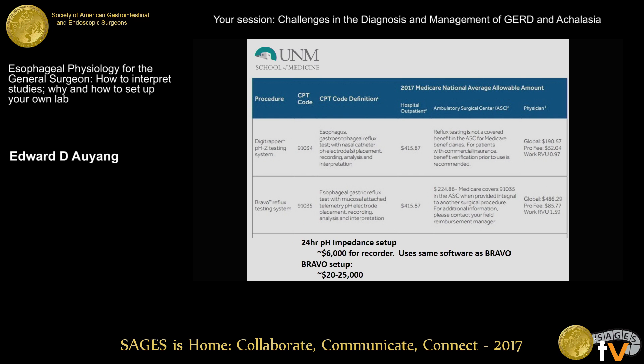Similarly for pH testing, CPT 91034 and 91035 are your two primary codes for standard catheter and for Bravo respectively. You can see what the hospital fees and reimbursements are. You need to do relatively high volume if you're talking about purely breaking even, but again, there's more to it than just revenue generation from that standpoint.